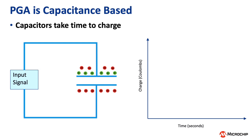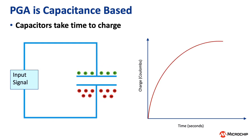As mentioned before, the PGA in the Tiny2 family is capacitance-based, and for those not familiar with capacitors, they take time to charge and discharge. So as a result, we need to consider the sampling and initialization times when using the ADC and the PGA.